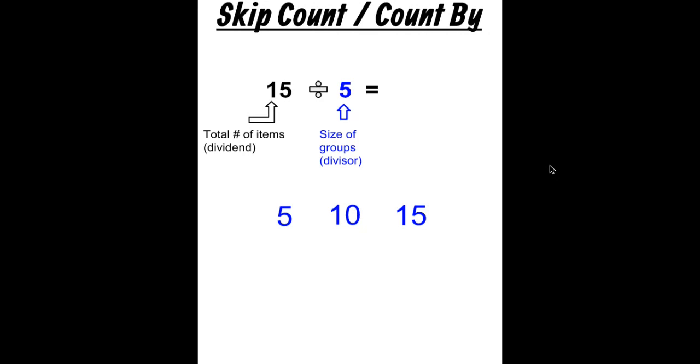Then we stop, and we count. How many times did we have to count by 5 to reach 15? We counted 1, 2, 3 times. So the quotient is 3. There are 3 equal groups of 5 when we divide 15 by 5.